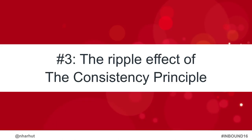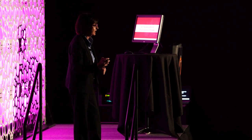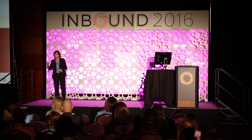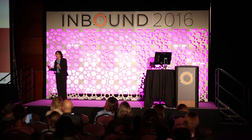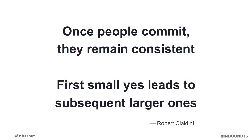Our third hack is the ripple effect of the consistency principle. Social scientists have found that once someone makes a decision or takes a stand, they like to remain consistent with it when future opportunities arise — and they do this without giving it much thought. For email marketers, this means if we can get somebody to say yes to us once, we're much more likely to get a second yes, a third yes, a fourth yes. This is particularly true if our first ask is relatively small and the answer is somehow public. This is actually one of Robert Cialdini's six principles of persuasion.